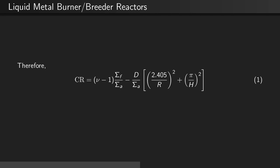Therefore, the conversion ratio equals (nu minus 1) times Σf over Σa minus the diffusion coefficient divided by Σa times [(2.405 divided by the radius) squared plus (π divided by the height) squared].